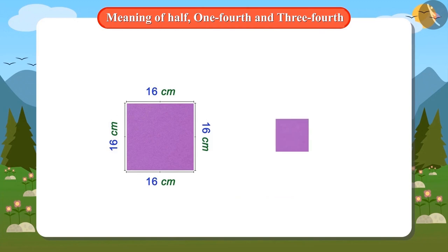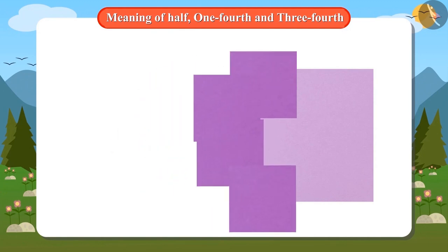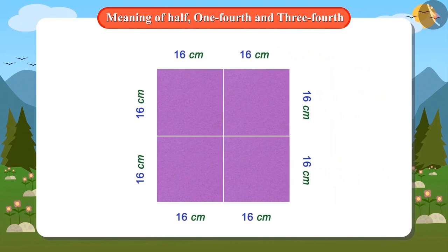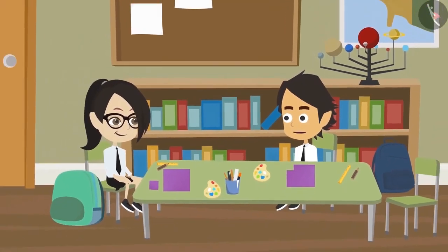Whereas, all the sides of the cardboard I had cut are 8 centimetres. Now, if we cover four parts equal to this part with sides 16 centimetres and cover this cardboard, then it will be completely covered. This means it is a quarter of this cardboard. Now I have understood properly.